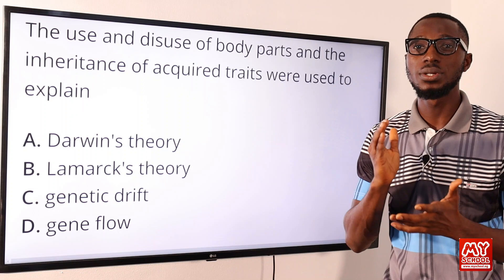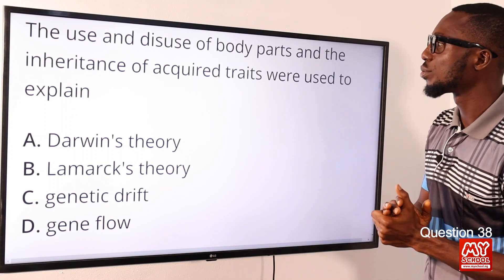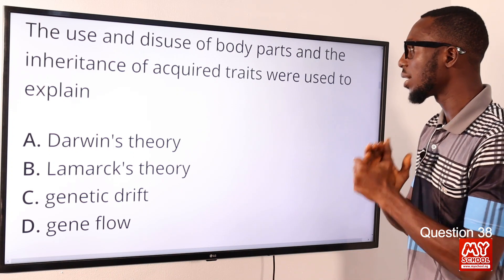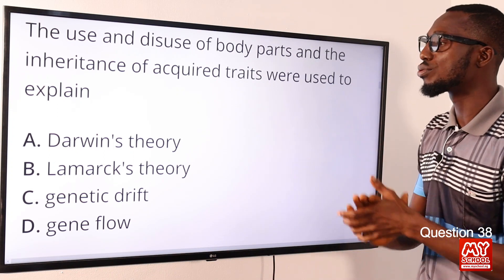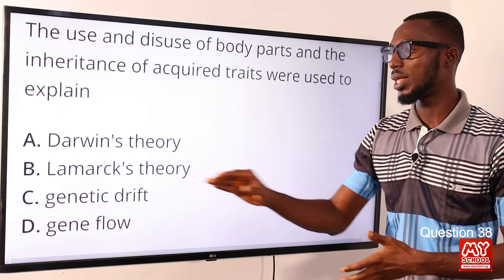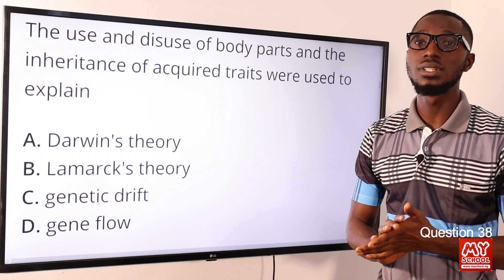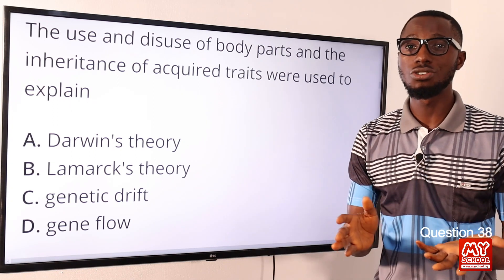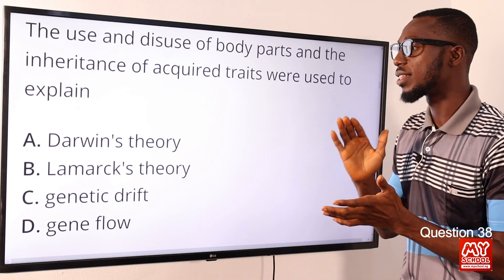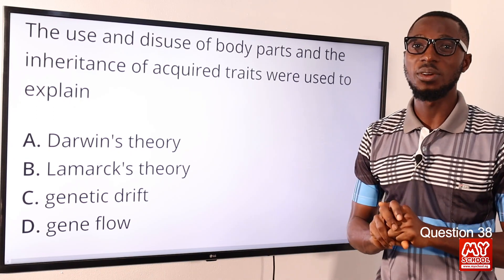Question 38. The use and disuse of body parts and the inheritance of acquired traits are used to explain Jean Lamarck's theory. Darwin's theory is about natural selection — survival of the fittest. So the correct option here is option B for Lamarck's theory.